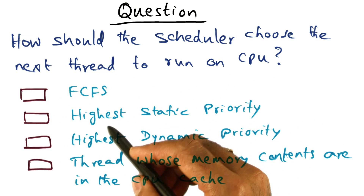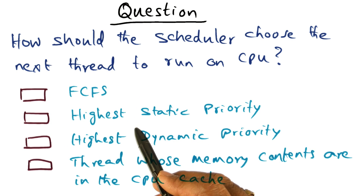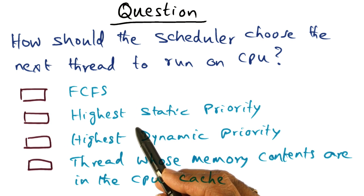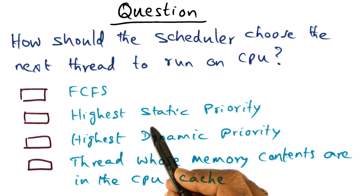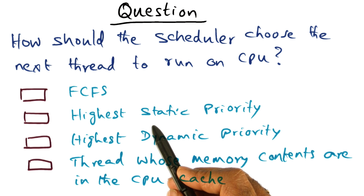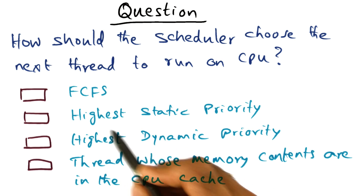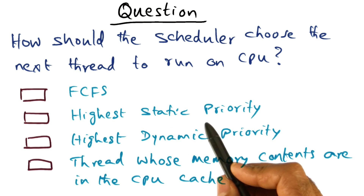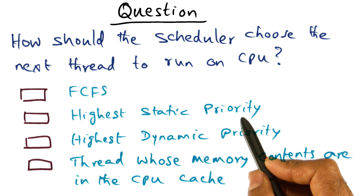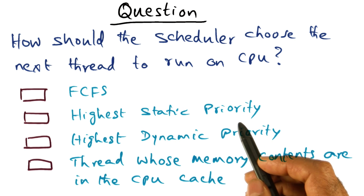The second possibility is it's going to assign static priority to all the threads, and it's going to pick the thread that has the highest static priority to run on the processor.